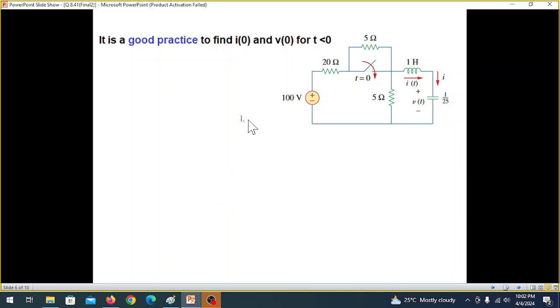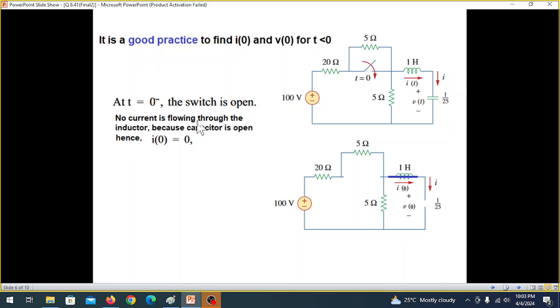Now before we go further, it is a good practice that we find I0 and V0. So I0 is actually I0 minus. That means when the switch is not closed, when it is open. That means the circuit is like this. And it is in the steady state condition. And at a steady state, we know that the inductor behaves like a short circuit. And the capacitor behaves like an open circuit. So what will be the current? No current is flowing through the inductor. Because this is open circuit. And therefore, we can say that I0 or I0 minus is equal to 0.